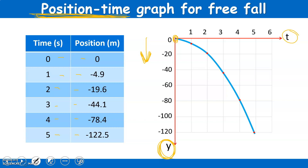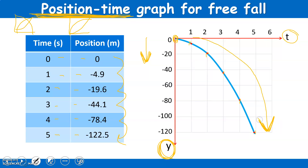As you can see, you don't just add 4.9 or 9.8 every time. As the object is falling it is accelerating, so the speed is increasing exponentially. Once we graph all our points, the graph should look like this — it is a curved graph. For a position versus time graph, any curved line indicates acceleration. For a free fall object, the graph curves downward, because we are moving further and further from zero in the negative direction.